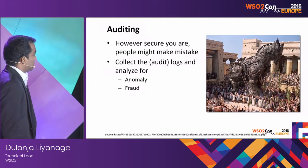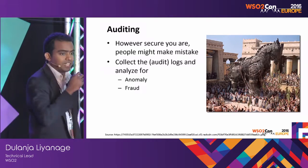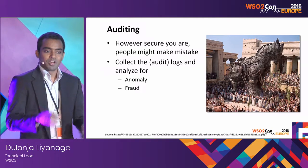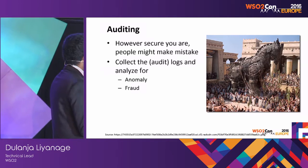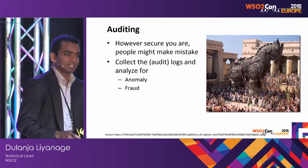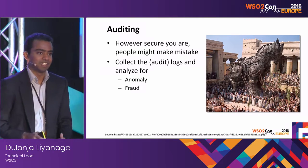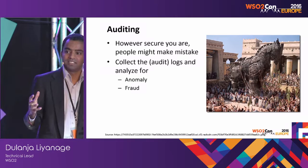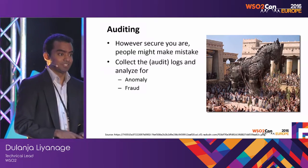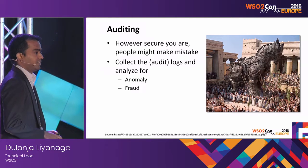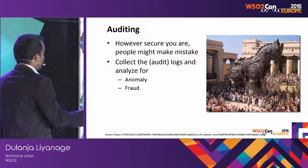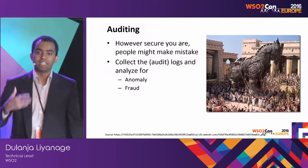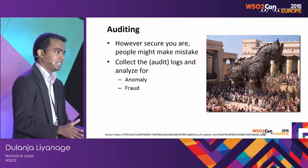Coming to auditing: in the first slide showing the statistics, 50% of threats were caused by human error. Whatever measures you take, people might still make mistakes, and there's a 50% chance of that. It can be like a Trojan horse — you have a very strong castle, but one person might let the threat in, compromising your security. You need to have audit logs and periodically analyze those logs for any anomaly in the system, because people do make mistakes.